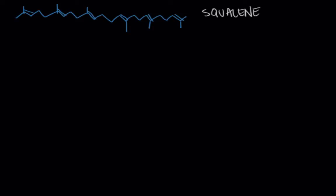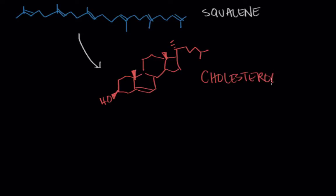And so the body takes squalene and through a series of ring closing or cyclization reactions it makes cholesterol. And we consume some cholesterol in our diet but our body also completes this reaction in the liver. So our body takes squalene and turns it into cholesterol in the liver.